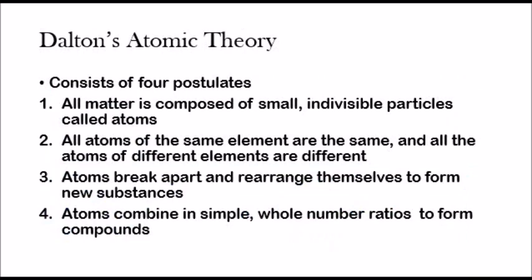From there, Dalton created his atomic theory, which consists of four postulates. First: all matter is composed of small, indivisible particles called atoms. Second: all atoms of the same element are the same, and all atoms of different elements are different. Third: atoms break apart and rearrange themselves to form new compounds. And fourth: atoms combine in simple whole number ratios to form compounds — meaning you can't have two-thirds of an atom. For example, carbon dioxide has one atom of carbon and two atoms of oxygen; you can't have C two-thirds O three-fifths.